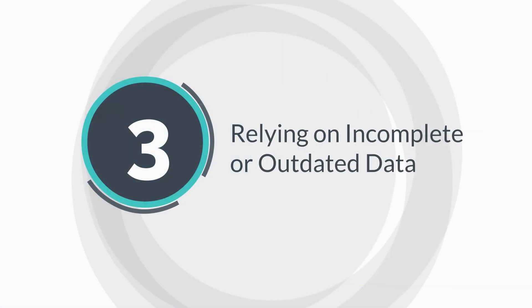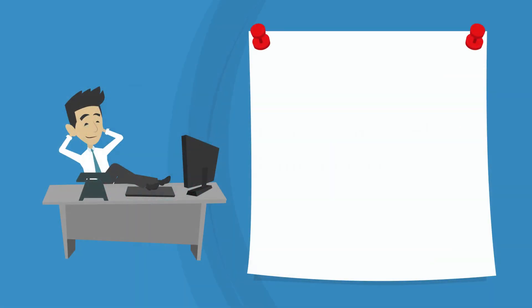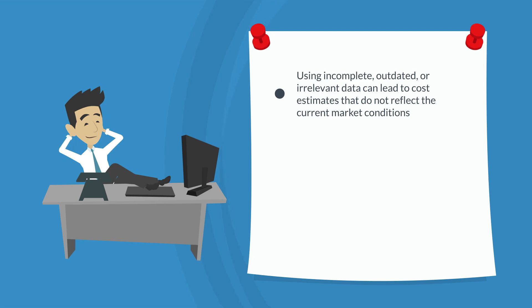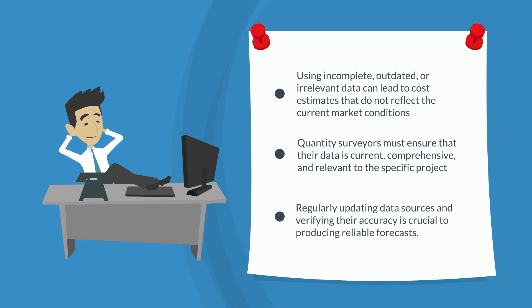Mistake three: relying on incomplete or outdated data. The accuracy of a forecast is only as good as the data it's based on. Using incomplete, outdated, or irrelevant data can lead to cost estimates that do not reflect current market conditions, resulting in significant budget discrepancies. Quantity surveyors must ensure that their data is current, comprehensive, and relevant to the specific project. Regularly updating data sources and verifying their accuracy is crucial to producing reliable forecasts.